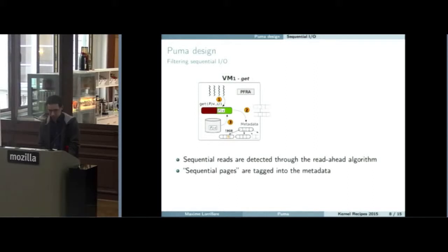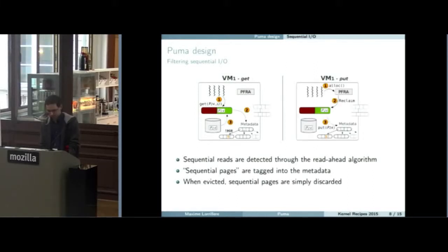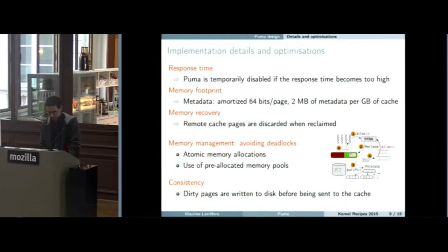For the first time we tag it and when it is chosen as a victim page, we do not send it to the cache. When you have to evict such a page, we know that it has been tagged previously. So it has been read in a sequential manner and we decide to not send it to the cache. This is a way to focus only on random accesses so that we do not fill all the remote cache with a large stream.